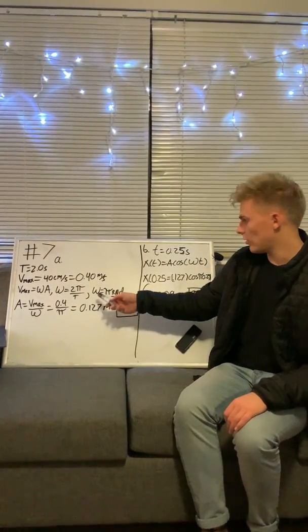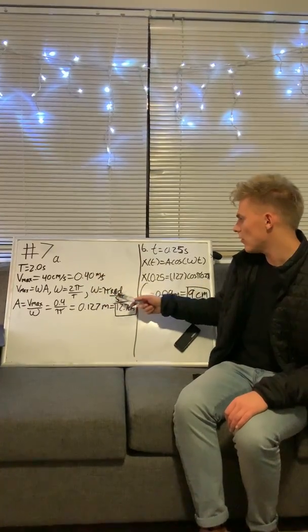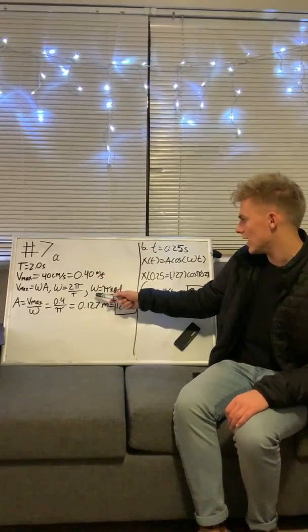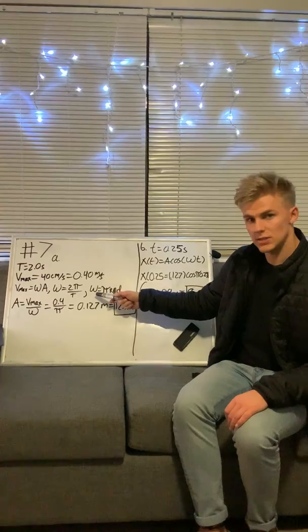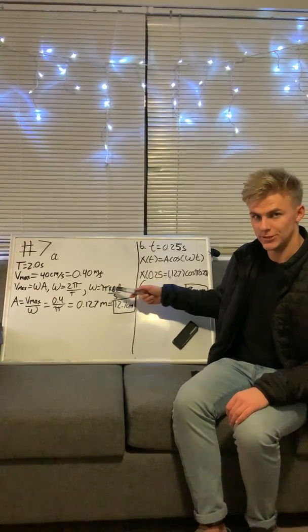When we plug everything into that equation and do the math, we find that omega, or our rotational speed, equals π radians per second.